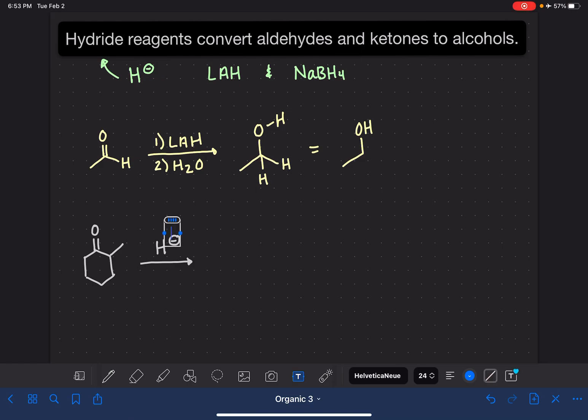The hydride ion attacks the carbonyl carbon, opening up the carbon-oxygen double bond. This gives us this molecule here. I won't draw that hydrogen because we don't typically show hydrogens in line structures. Since we've moved the electrons onto the oxygen, we have a negative formal charge on the oxygen.